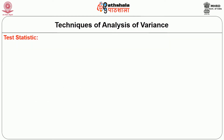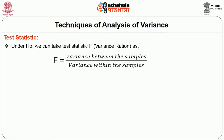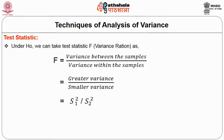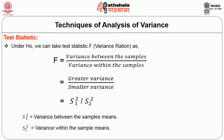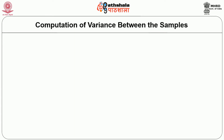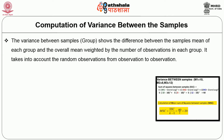Then the test statistic: under H₀, we take the test statistic F = variance between samples ÷ variance within samples, which equals the greater variance divided by the smaller variance, i.e., S₁² ÷ S₂², where S₁² is the variance between sample means and S₂² is the variance within sample means. Let us discuss the computation of variance between the samples.